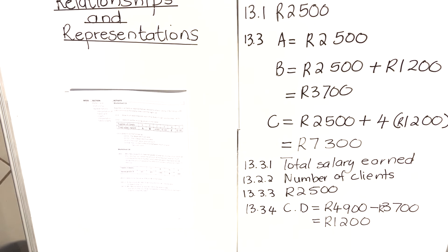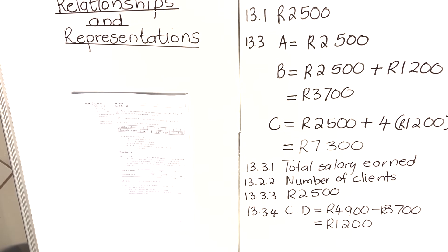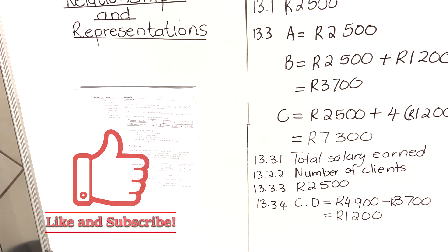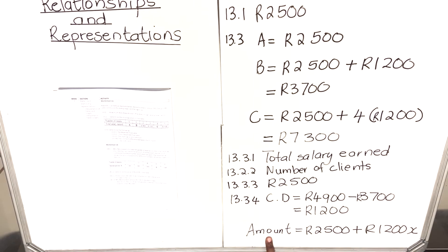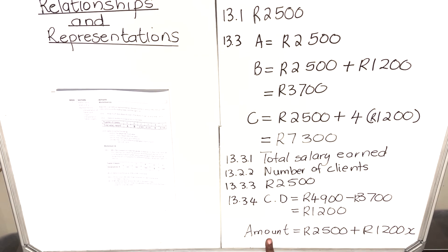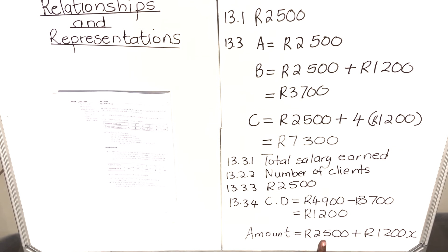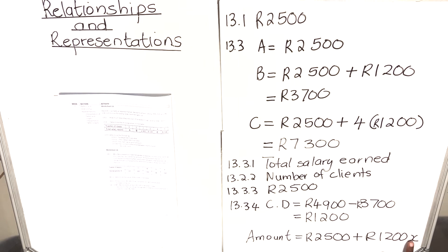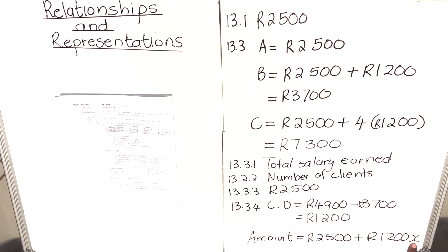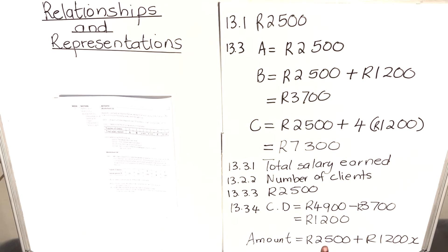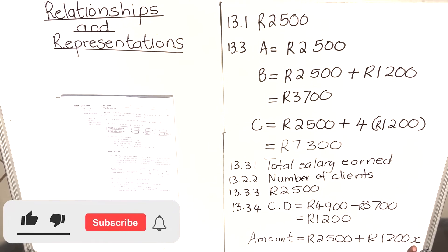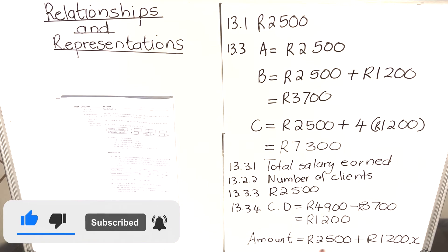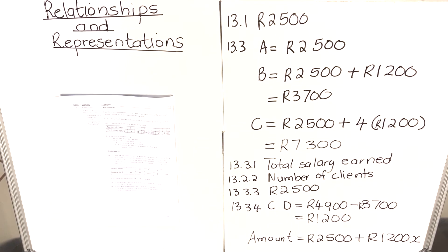Sometimes the question will also ask you to write a formula or equation for this relationship. The total salary depends on the basic salary of R2 500, which he gets whether he gets clients or not, plus R1 200 per client. If he gets no clients it's zero, so the formula would be: total salary = R2 500 plus (number of clients × R1 200).